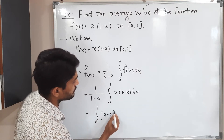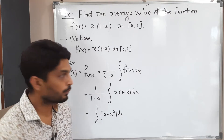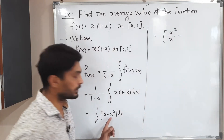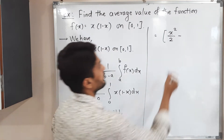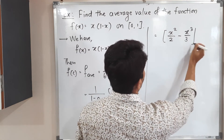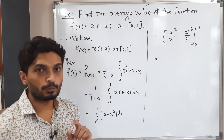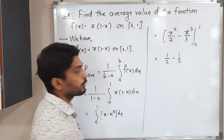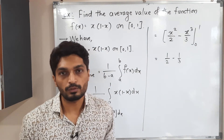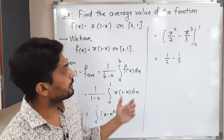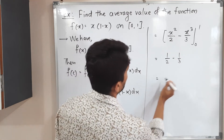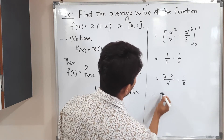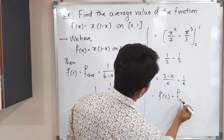We simplify by expanding the bracket: x minus x squared dx. The integration of x is x squared by 2, and the integration of x squared is x cubed by 3. So we get x squared by 2 minus x cubed by 3, with limits 0 to 1. First we put the upper limit: 1 by 2 minus 1 by 3. Putting the lower limit 0 gives 0. So we have 1 by 2 minus 1 by 3, which cross-multiplied gives 3 minus 2 over 6, equal to 1 by 6.